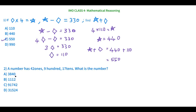Now let's see the second question for today. A number has 42 ones, 9 hundreds, and 17 tens — what is the number? The options are: option A is 3840, option B is 1112, option C is 91,742, and option D is 31,524.